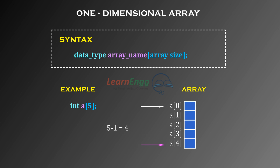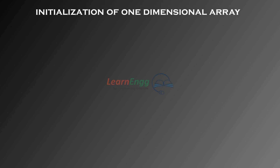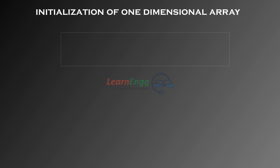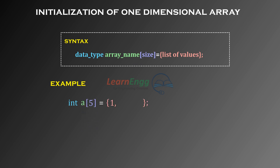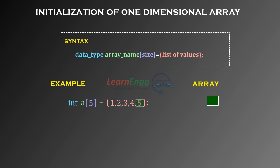Initialization of one-dimensional array: There are two ways of initializing a one-dimensional array — size is specified directly or indirectly. The general syntax is: data_type array_name[size] = {list of values}. For example: int a[5] = {1, 2, 3, 4, 5}. Values are declared inside a pair of braces. Here, the array size is directly specified as five, and the compiler assigns the set of values to the particular elements of the array.